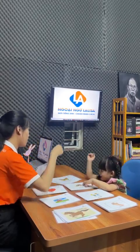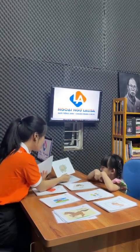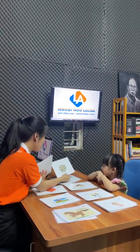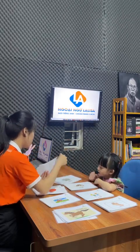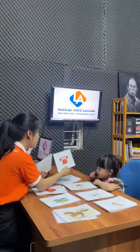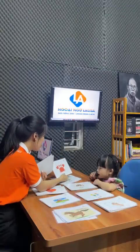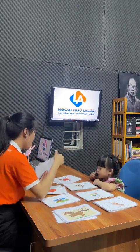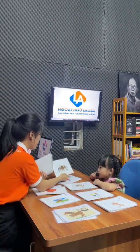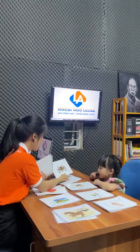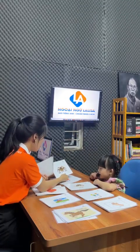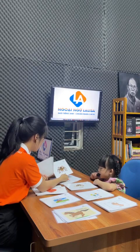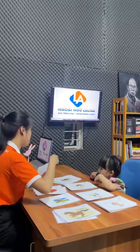What animal is this? Rhino. A rhino. And how about this? Crab. It's a crab. And you see up? Spider. A spider — big or small? Small. The next one?